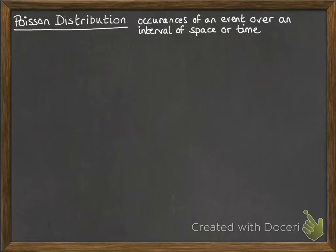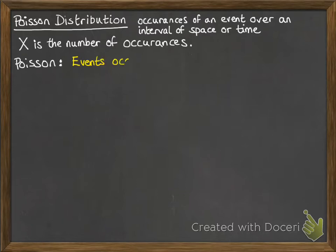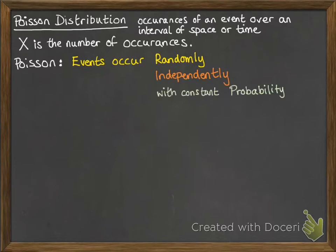It's looking at occurrences of an event over an interval of space or time. x is the number of occurrences and then we talk about x following the Poisson distribution. So Poisson distribution applies if the events occur randomly, if they occur independently of each other, with a constant probability, and singly so they don't happen at the same point or time. And we can remember this with this RIPS.